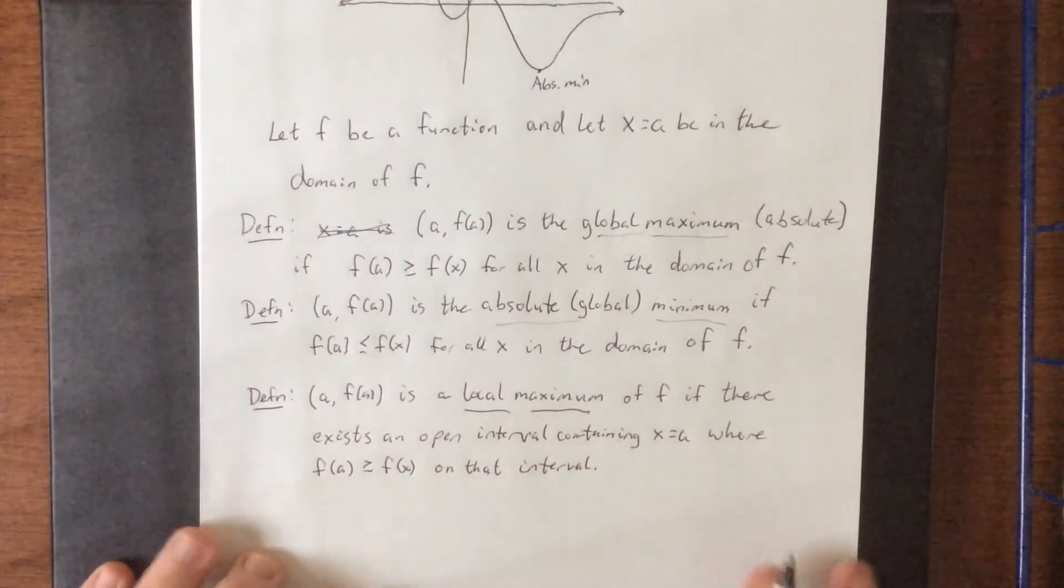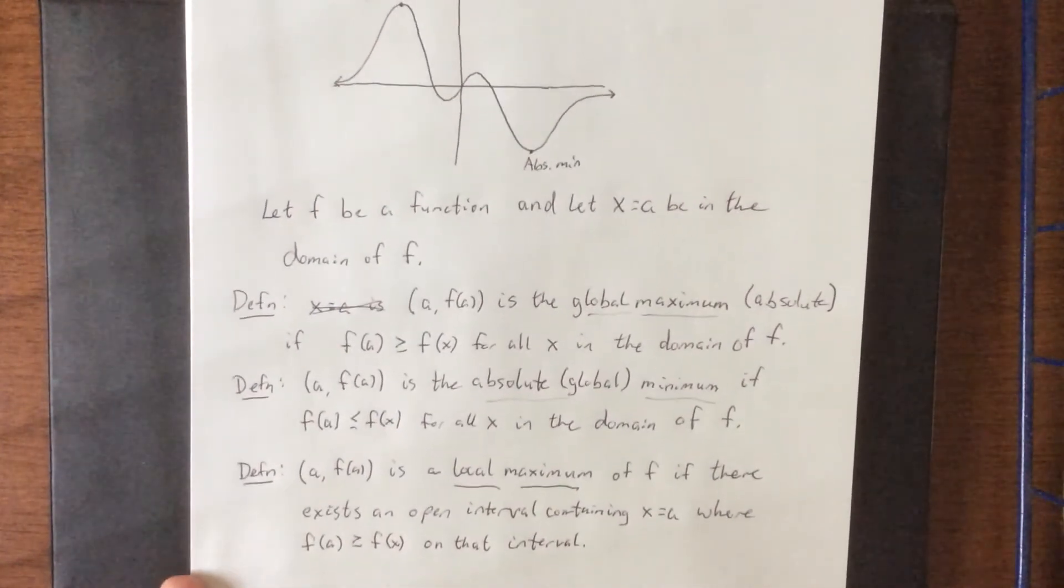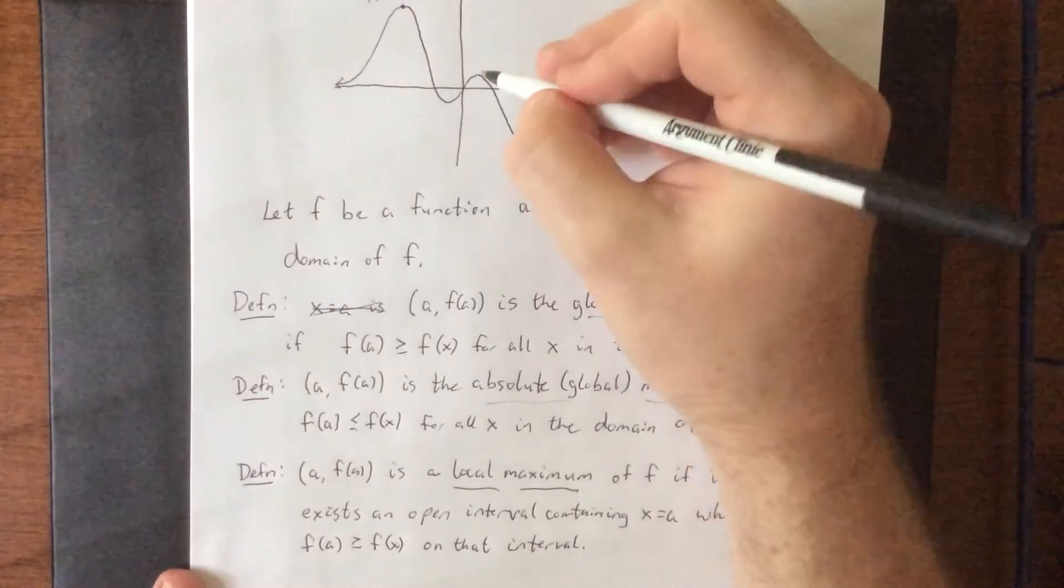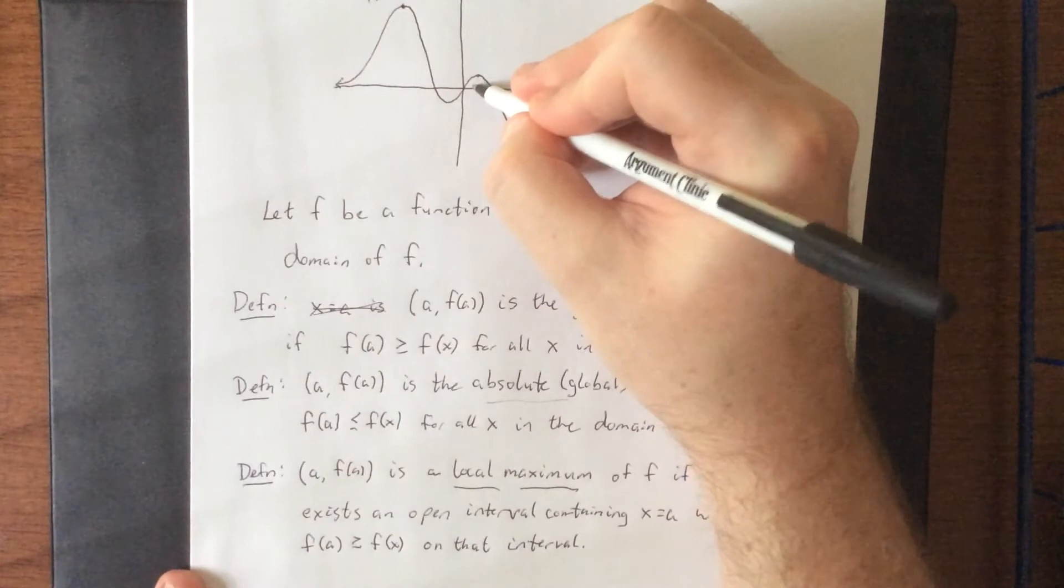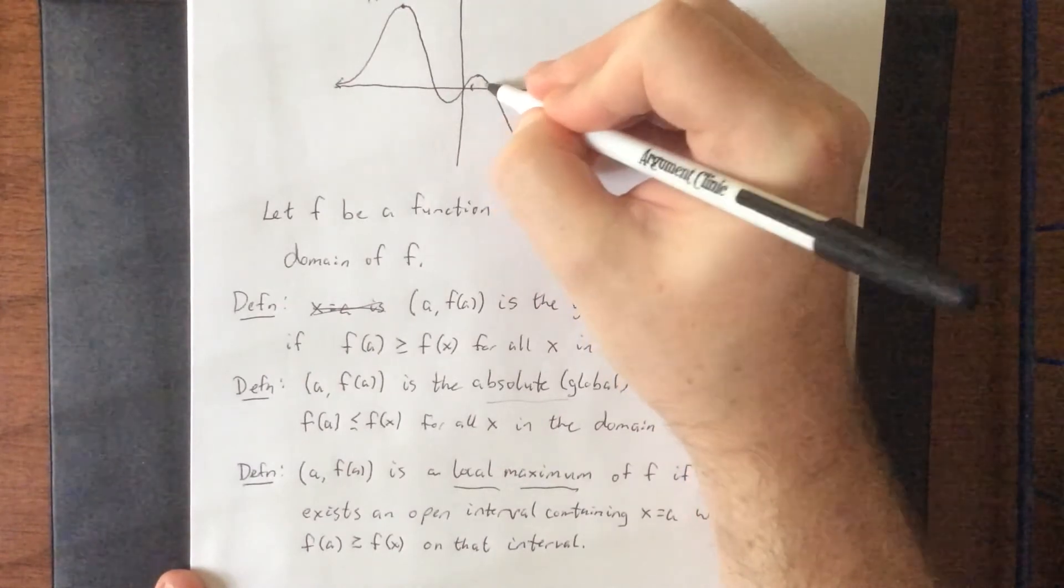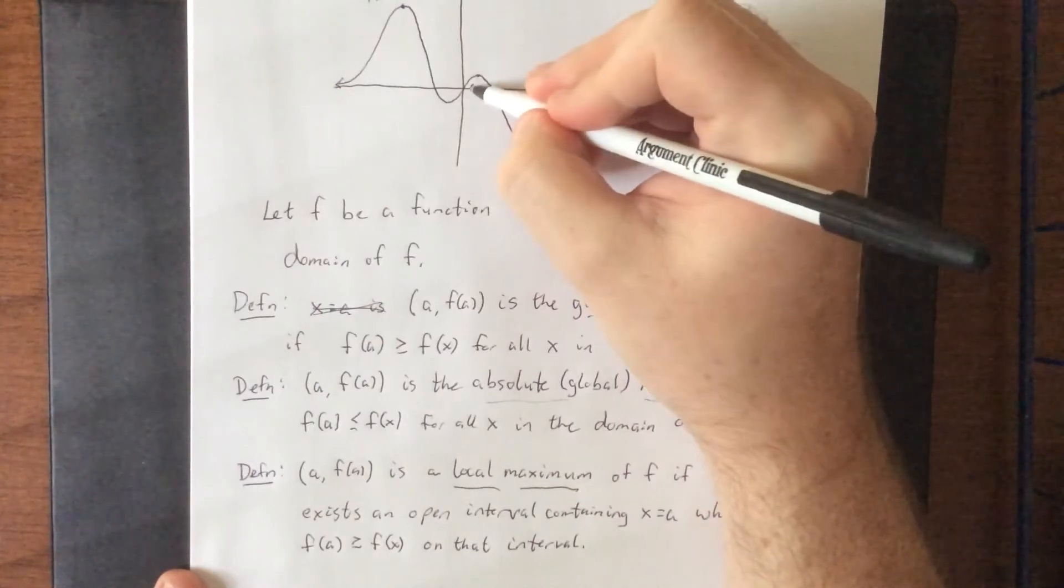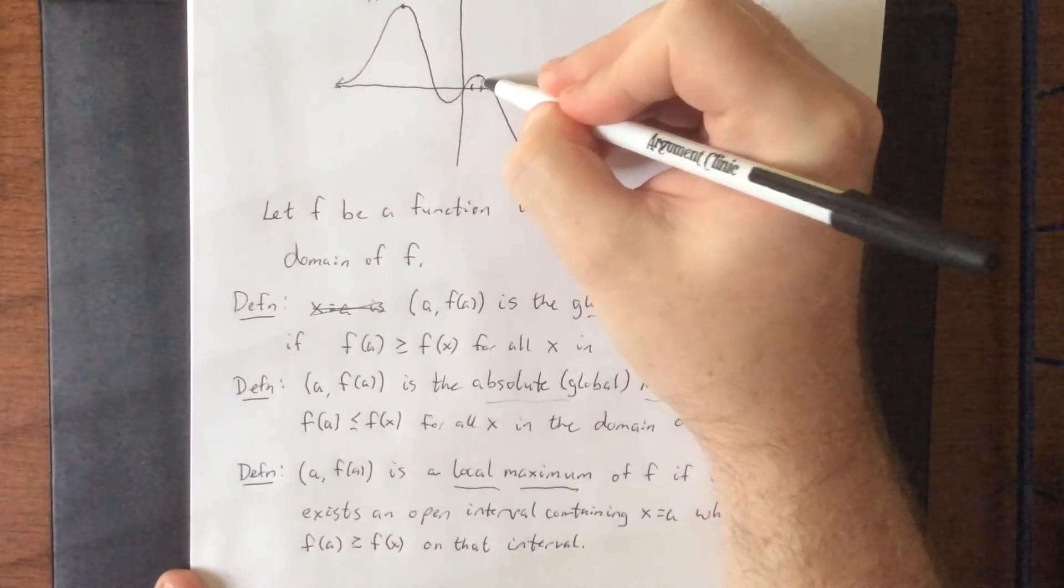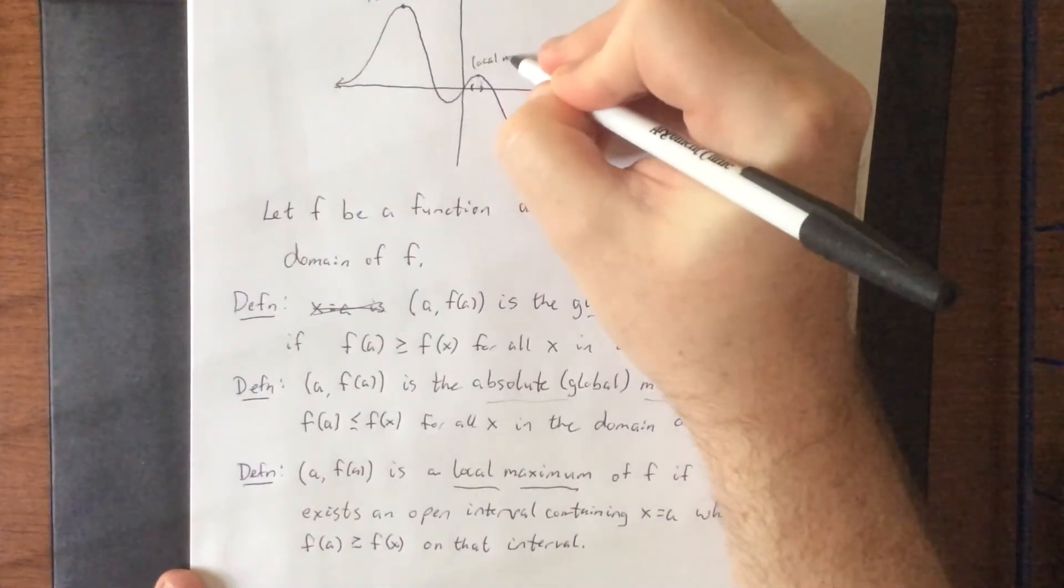So it doesn't have to be the highest point on the graph, but you do need to establish a little neighborhood in which it is the highest point. Now in this case, if we take a look at this point right here, I can establish a little open interval right around this point, where it's definitely not the highest point on the function, but it's definitely the highest point on this little neighborhood right around it. This would be considered a local maximum.